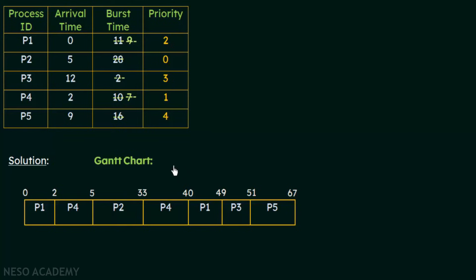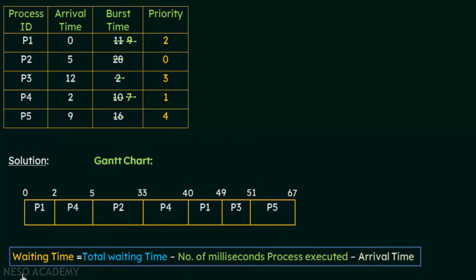This is how we form the Gantt chart for processes following preemptive priority scheduling — whenever a higher-priority process arrives, it preempts the currently executing lower-priority process. Now that the Gantt chart is formed, calculating the average waiting time becomes easy. The waiting time formula is: total waiting time minus number of milliseconds the process executed before minus the arrival time.